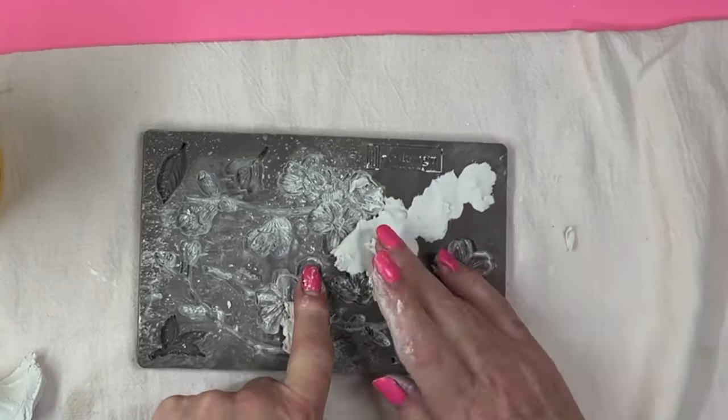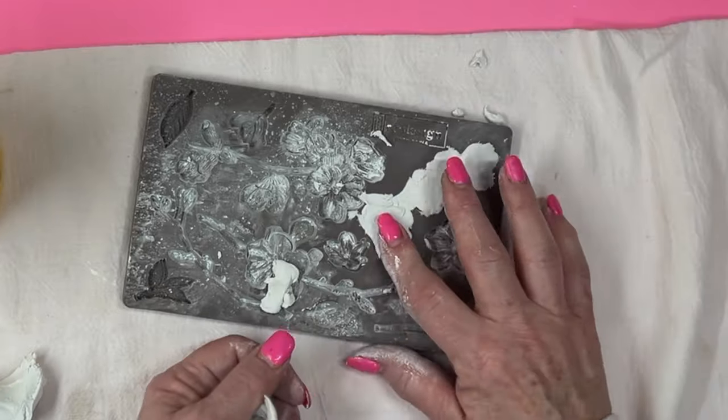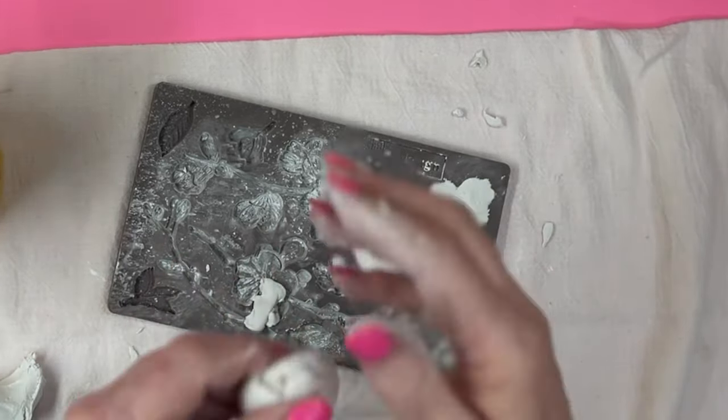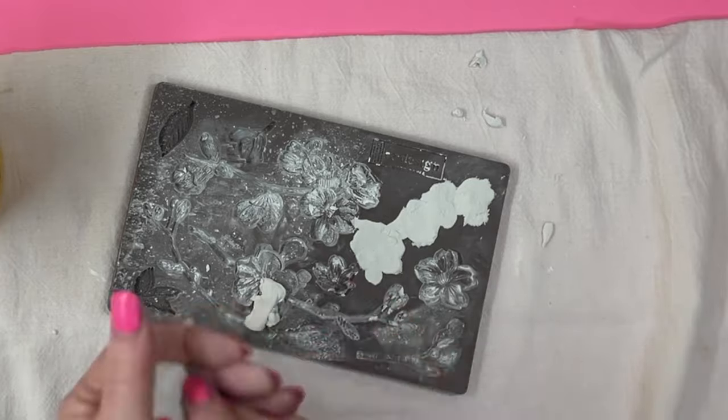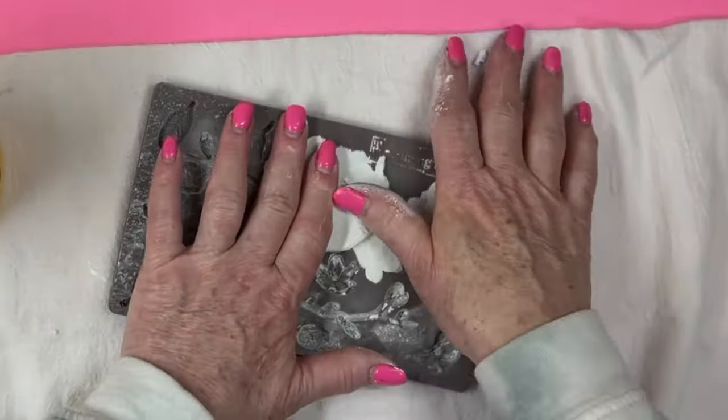I just used small amounts of clay and just filled up the different flowers and stems, and then I would just keep going instead of having a big piece of clay and trying to fill the whole thing up at once. It's just easier working in small pieces or small sections.